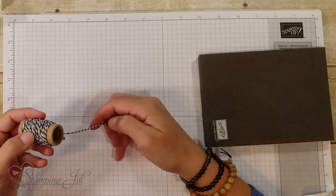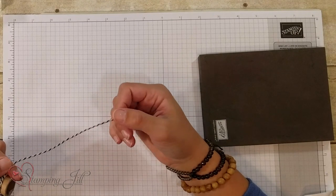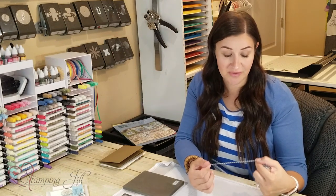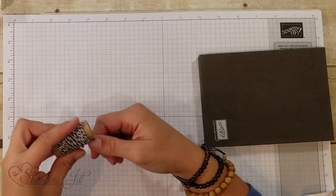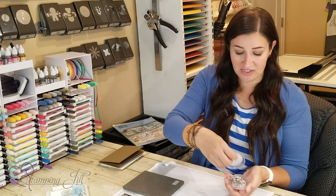I love this new baker's twine. It's got the night of navy, but it's strung with crumb cake. So it's a little bit of a softer look instead of being so bright with the white and it's a little bit thicker. A lot comes on this bowl.